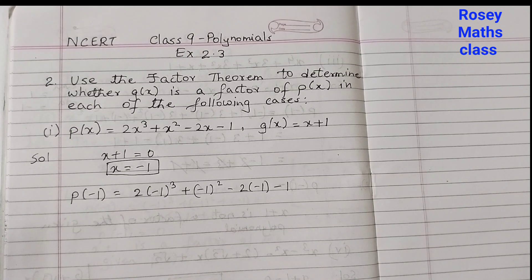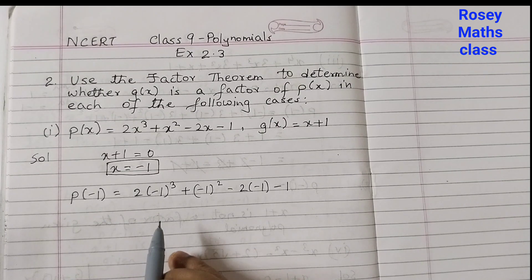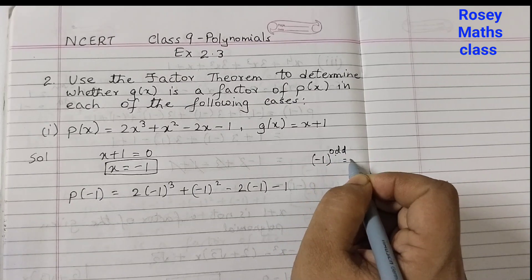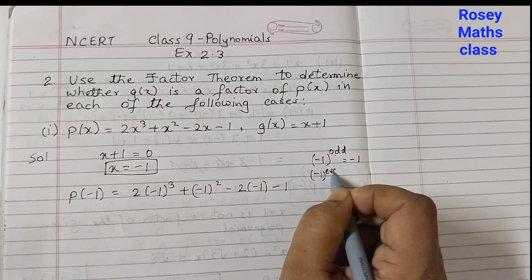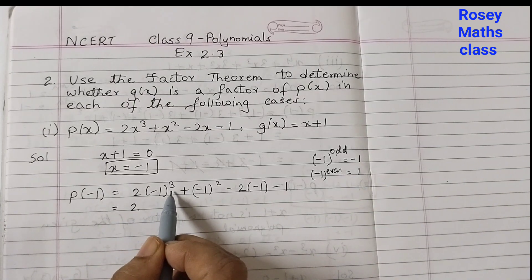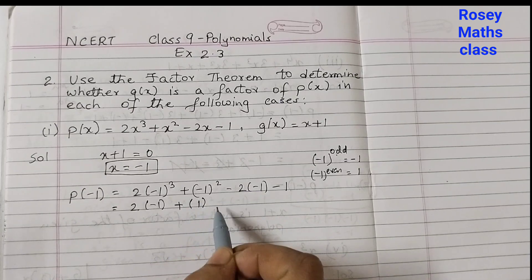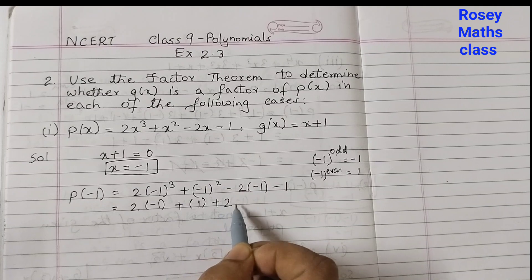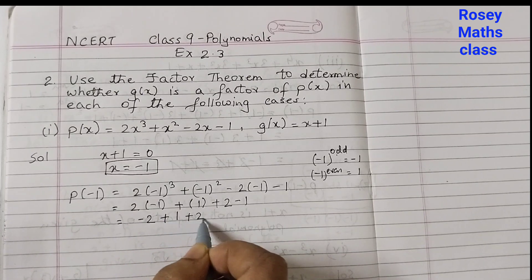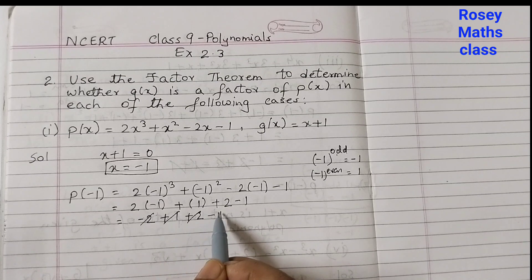Remember: whenever you have −1 to the power of an odd number, you always get −1, and −1 to the power of an even number you get 1. Here 3 is odd, so (−1)³ = −1; 2 is even, so (−1)² = 1. This gives: 2(−1) + 1 − (−1)(2) − 1, which simplifies to −2 + 1 + 2 − 1. The −2 and +2 cancel, and +1 and −1 cancel, giving 0.